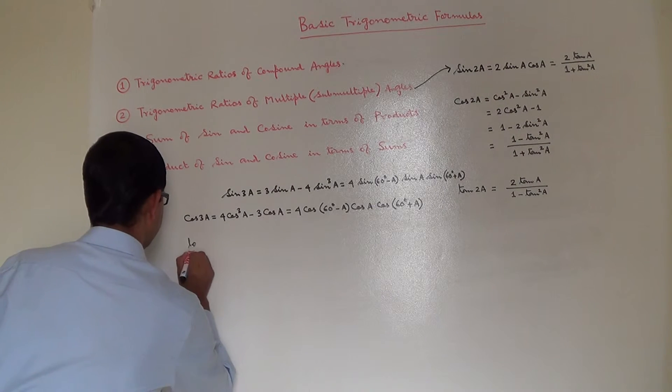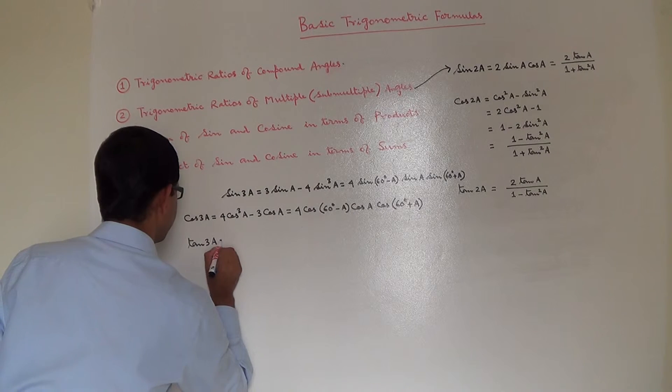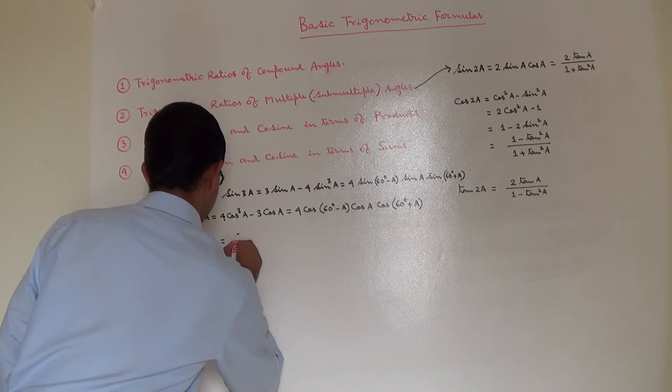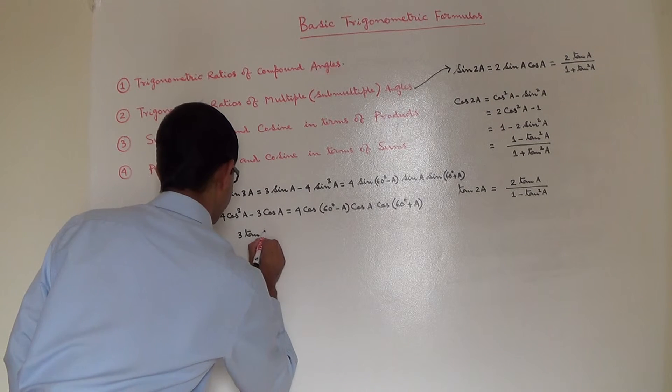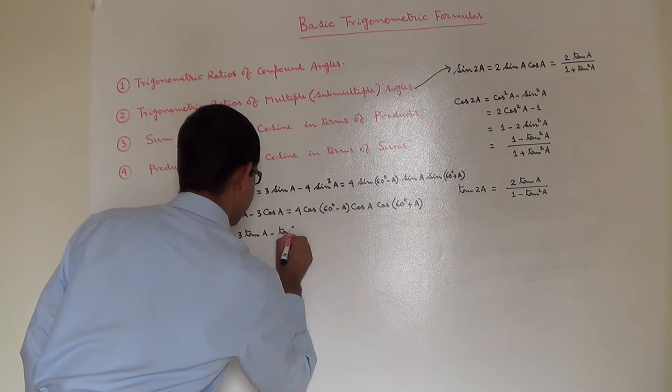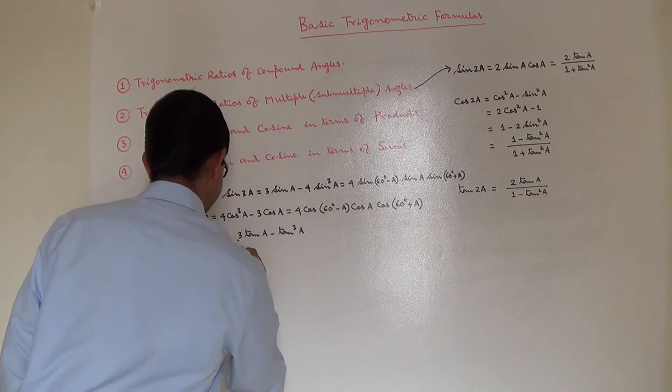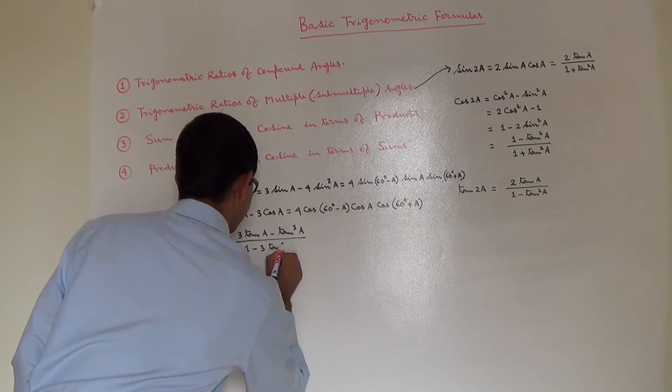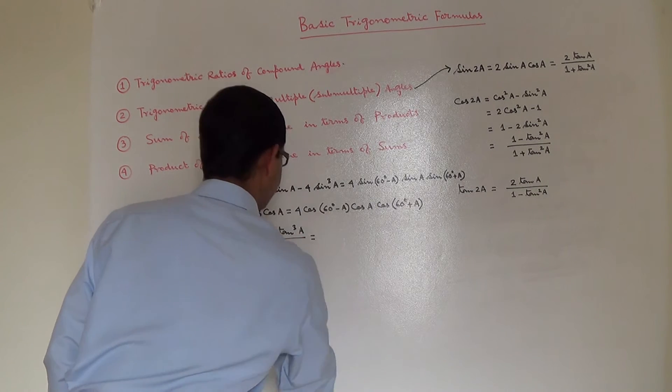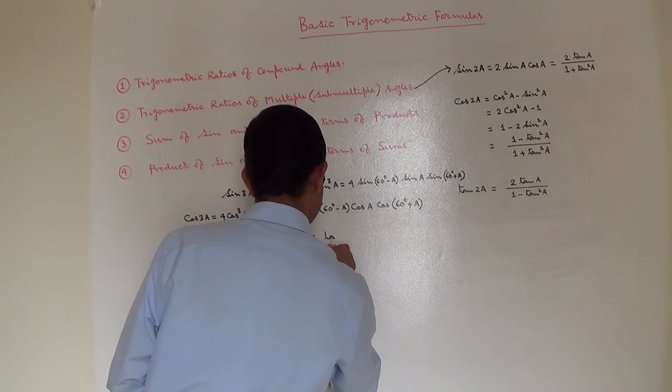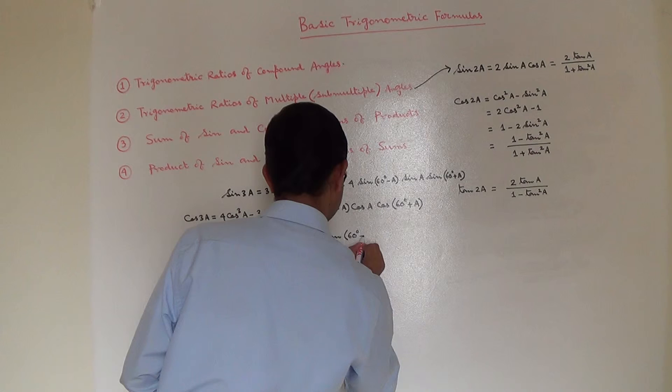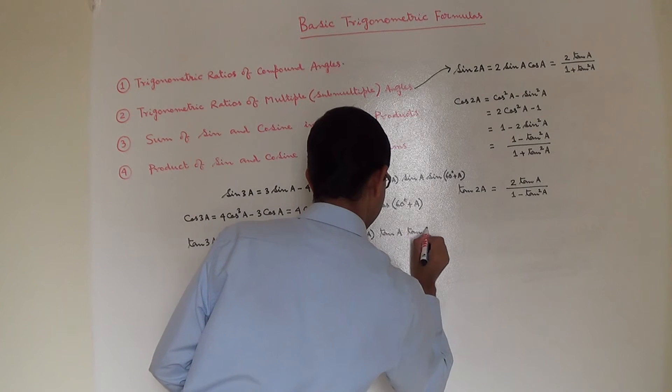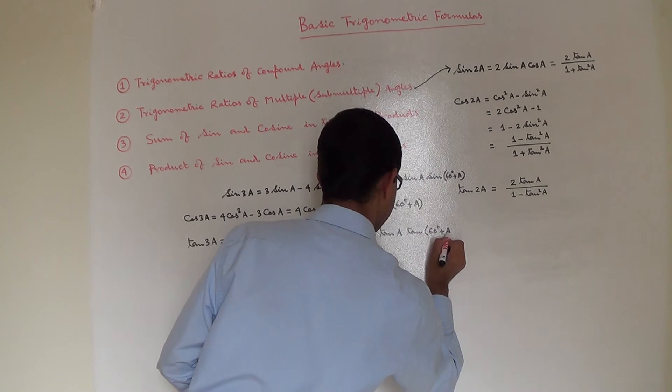Now, what is tan 3A? Tan 3A is equal to 3 tan A minus tan cube A divided by 1 minus 3 tan square A. That is also equal to tan of 60 degrees minus A into tan A into tan of 60 degrees plus A.